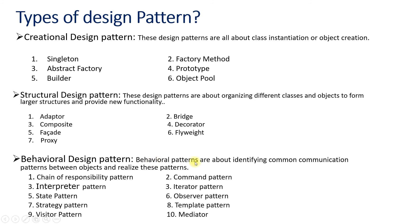The third one is the Behavioral design pattern. Behavioral design patterns are about identifying the common communication patterns between the objects and realizing these patterns. There are 10 design patterns which belong to this behavioral category. The first one is the Chain of Responsibility, the second is the Command pattern, the third is the Interpreter pattern, after that we have Iterator, and around six more. This video is just the introduction and a little bit of history of these design patterns. In the next videos we are going to see all these design patterns in detail.